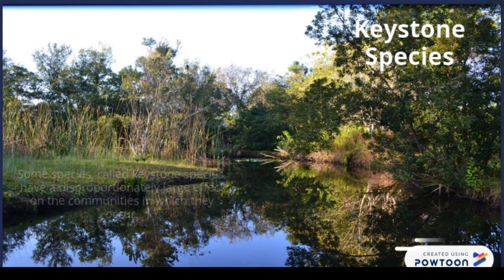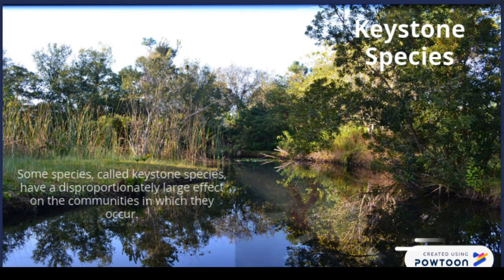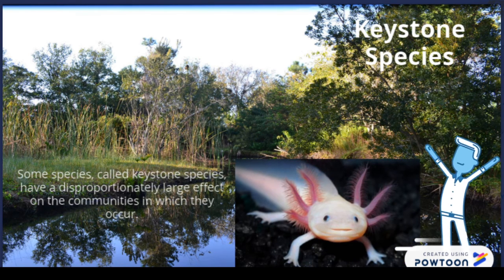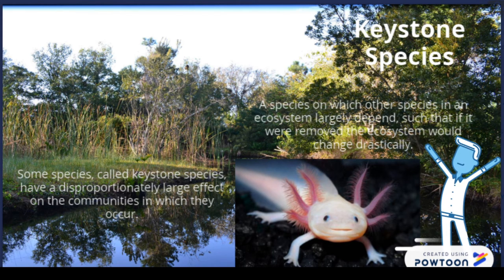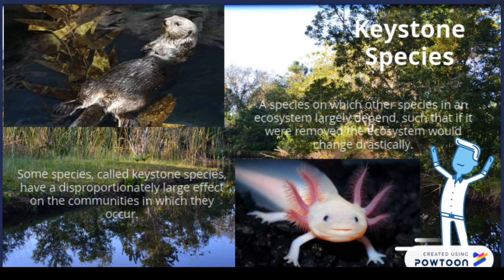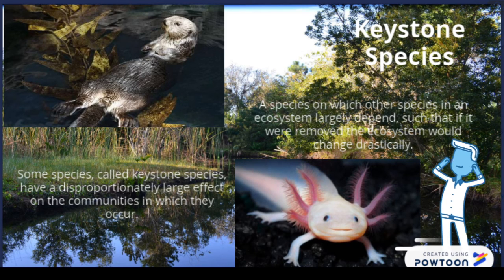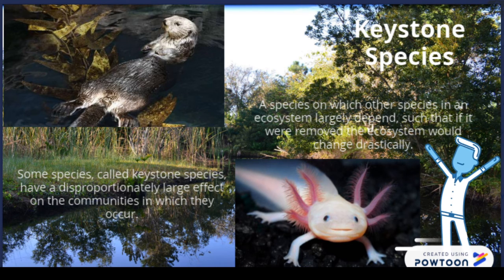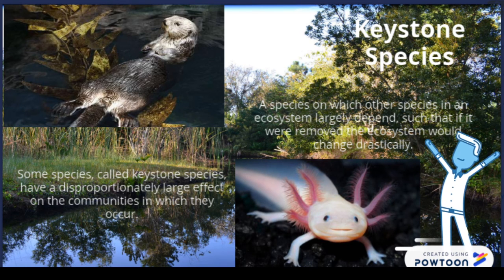With some of these, you also have the representation of the keystone species. These are species that if anything ever happened to them, it would show a drastic change in the environment — such as with the axolotl, the top predator in a Mexican pond or that environment itself. These are usually the most studied and the ones that scientists use to keep track of how the environment is doing.